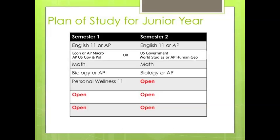Juniors will need to register for at least one credit of English 11 — for some that will mean an AP class or an MSU English, for others it will be English 11. Students will also need to register for one credit of Social Studies and one credit of Biology. Whether you choose AP or regular will be up to you. It is advised that you speak with your current teachers, counselors, and parents or friends for recommendations — they will have a perspective that will help you make your decision.